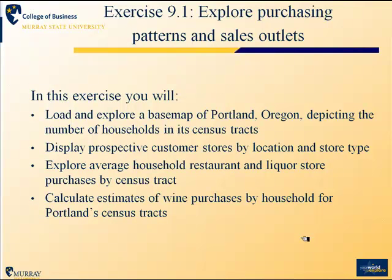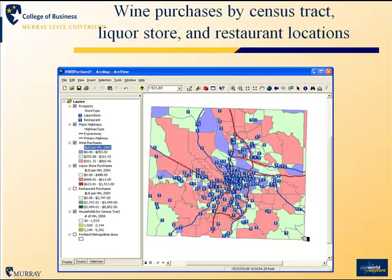You'll start in task one of this chapter with an exercise evaluating the purchasing patterns and sales outlets within the Portland, Oregon region. You'll use a base map of Portland and depict the number of households in each of its census tracts, display prospective customer stores by location and type, and calculate average restaurant and liquor store purchases and wine purchases per household for census tracts across the Portland area. You'll end up with a map illustrating both liquor stores and restaurants against a backdrop showing the level of wine purchases per household.